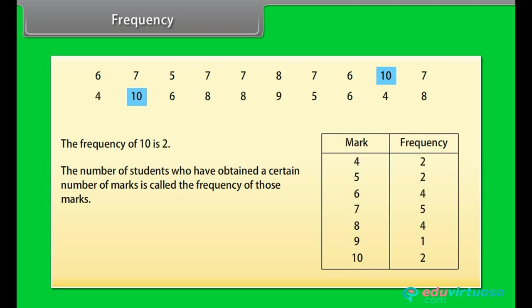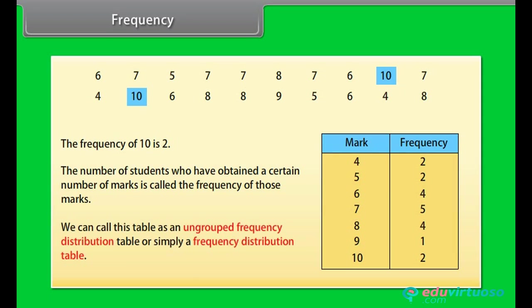We can write this data in a table form to make it more understandable — these are the marks and these are the frequencies. We can call this table an ungrouped frequency distribution table, or simply a distribution table.